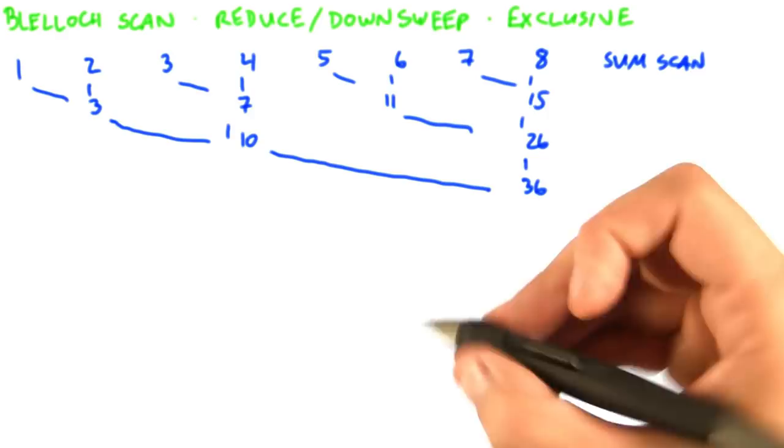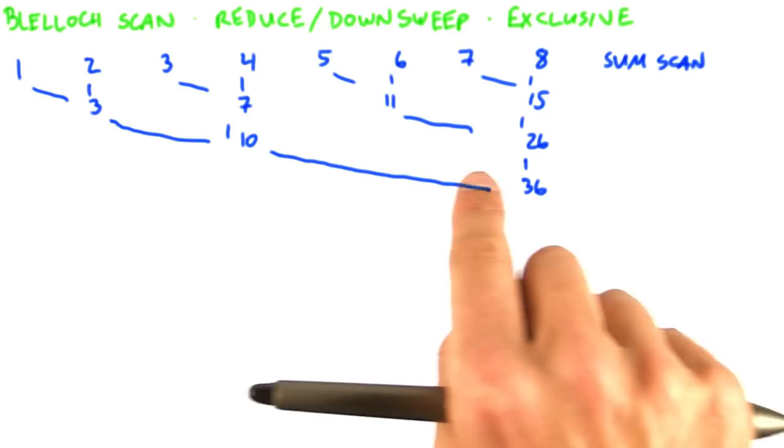By intermediate results, I mean this 1, this 3, this 3, this 10, 5, 11, and 7. Because we're going to use them during the down sweep step.